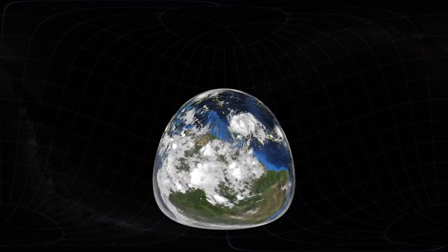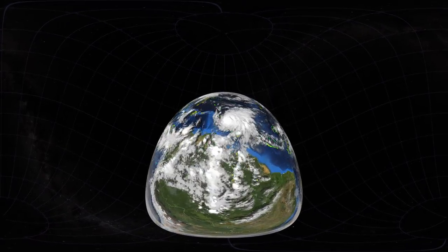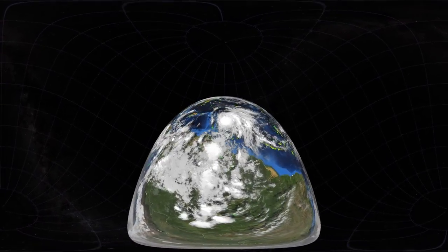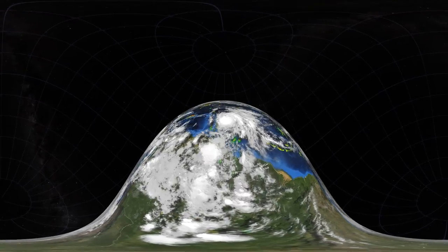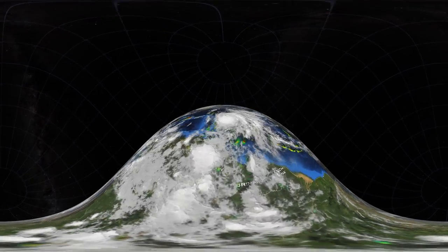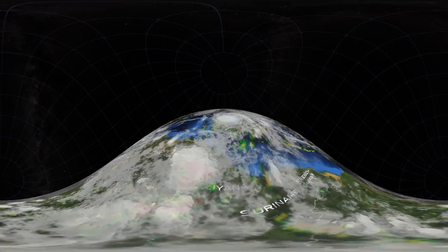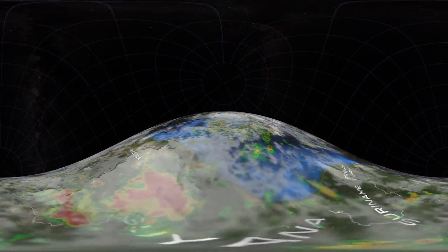NASA's precipitation satellite has an advanced radar that measures both liquid and frozen water inside hurricanes. This satellite is called the Global Precipitation Measurement Core Observatory, or GPM.